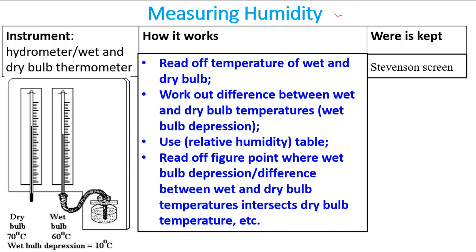To measure humidity, the instrument used is called a hygrometer, also known as the wet and dry bulb thermometer. It has a wet bulb and a dry bulb, and is kept inside the Stevenson screen. You read off the temperature of both bulbs, then work out the difference between the dry bulb temperature and the wet bulb temperature — this is called the wet bulb depression. For example, if the dry bulb is 70°C and the wet bulb is 60°C, the wet bulb depression is 10 degrees Celsius.